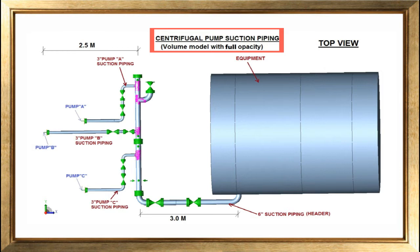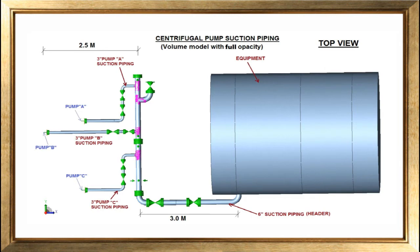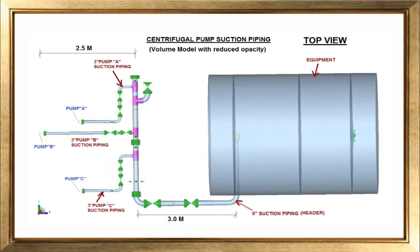For the ease of piping layout engineers and designers, I have represented the volume model of the equipment which is generally modeled as a rigid element in Caesar 2. The same model with reduced opacity is represented here, so the volume model of equipment is just for representation and better clarity.